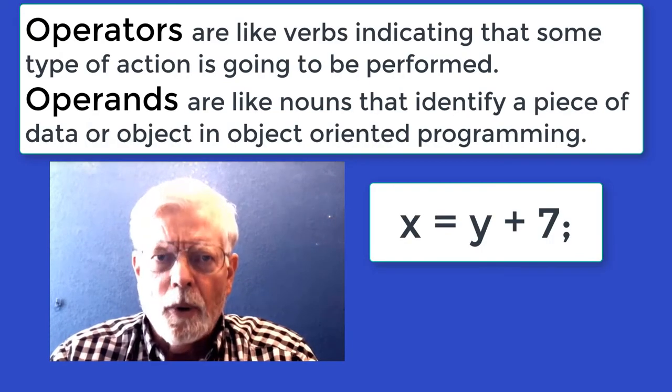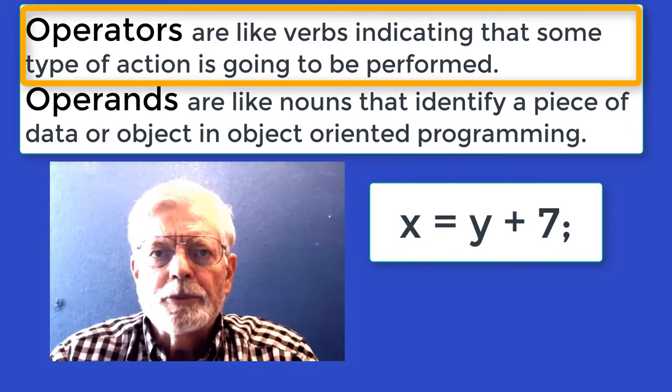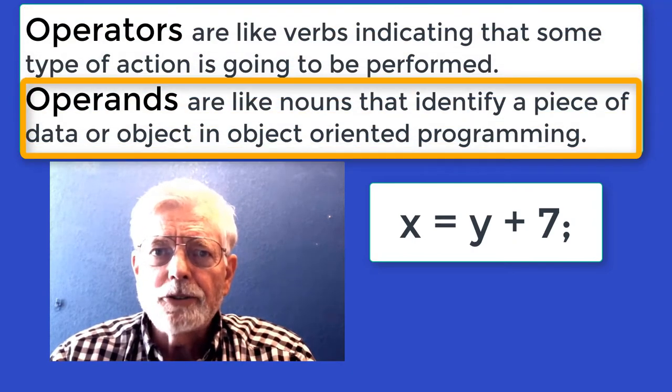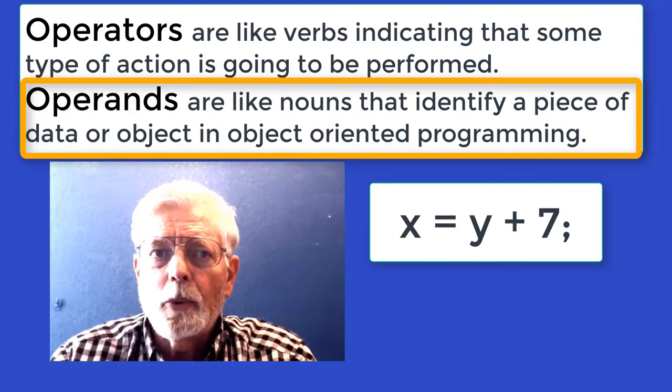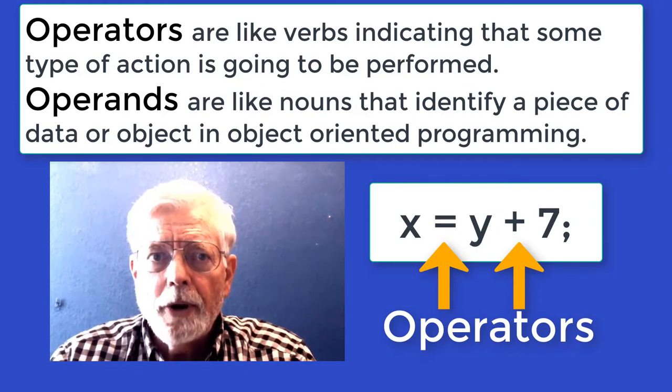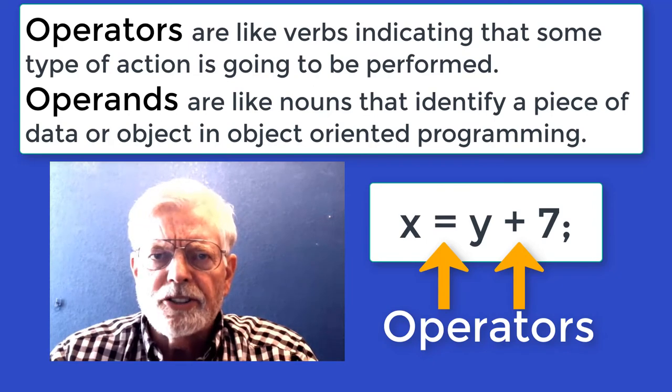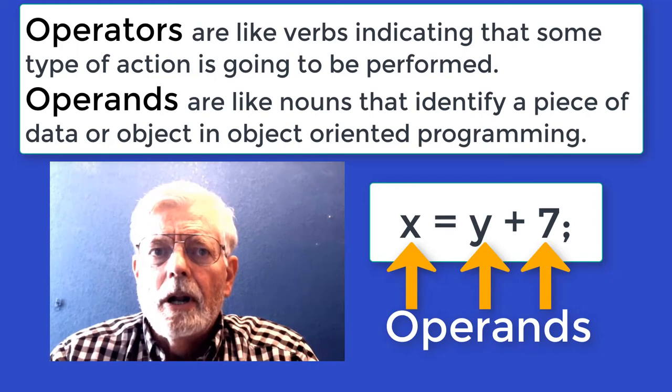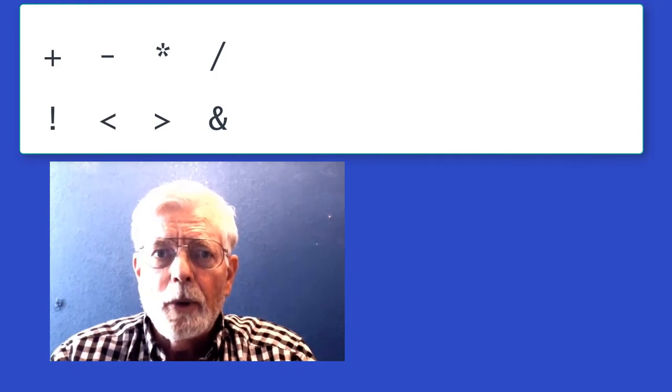We need to know what parts of the expression get evaluated first. Let's start out with a definition of operator and operand. Operators are like verbs indicating that some type of action is going to be performed. Operands are like nouns that identify a piece of data or object in object-oriented programming. The two operators in the expression x = y + 7 are the assignment operator (equal sign) and the addition operator (plus). The operands are x, y, and the number 7.